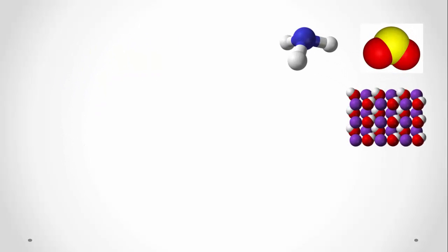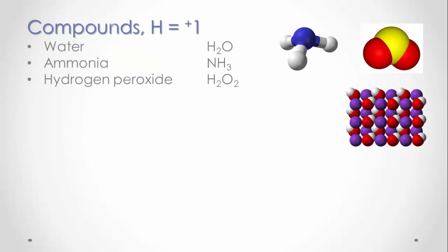Rule three applies to hydrogen atoms in compounds, such as water, ammonia, and hydrogen peroxide. In compounds, hydrogen has an oxidation state of positive one, representing the one electron that the hydrogen atom has lost to bonding.